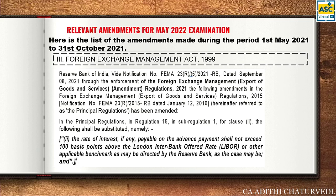For FEMA, there is just one amendment. The Reserve Bank of India, via notification through enforcement of FEMA (Export of Goods and Services) Regulations, amended Regulation 15, Sub-regulation 1, Clause 2: the rate of interest, if any, payable on advance payment shall not exceed 100 basis points above LIBOR (London Interbank Offered Rate) or other applicable benchmark as may be directed by RBI. This applies when exporting goods and receiving advance payment.